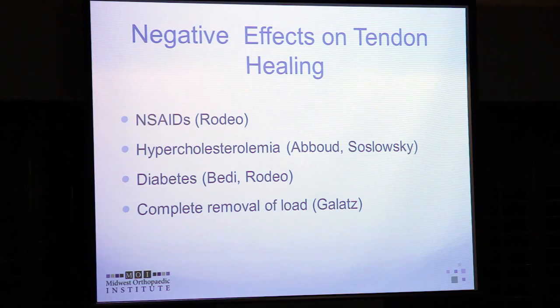Other associations affecting healing include NSAIDs, cholesterol, and diabetes. Interestingly, Galatz repaired rotator cuffs and then used Botox to remove all load from the tendons — and found they actually healed worse. Some form of controlled stress to the repair is helpful. This suggests that putting the shoulder completely at rest may not be ideal; some controlled stress stimulates healing, though what that optimal stress level is remains unknown.